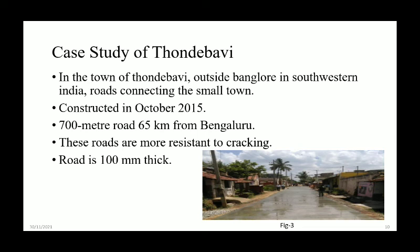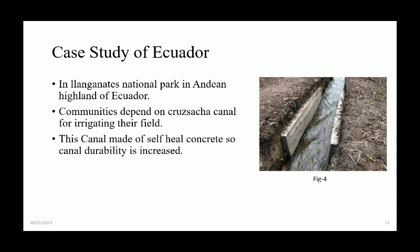Figure three shows the road of Thondehbhabhi. Another case study is from the quarter in Langenitz National Park on Ending Island. Communities depend on this cruise canal for irrigating their fields. This canal is made of self-healing concrete, so its durability is increased.